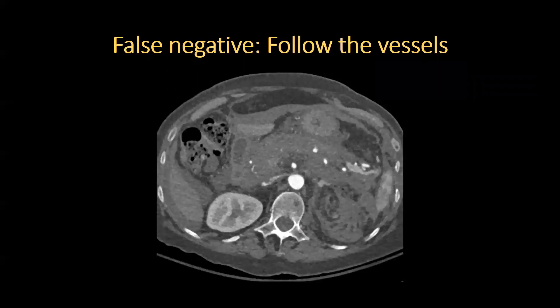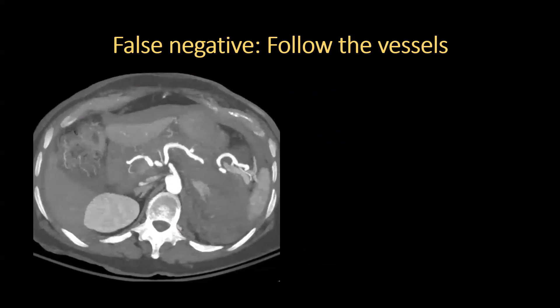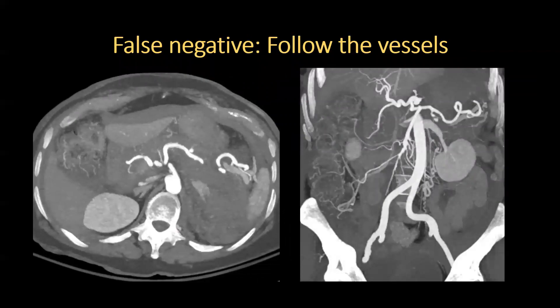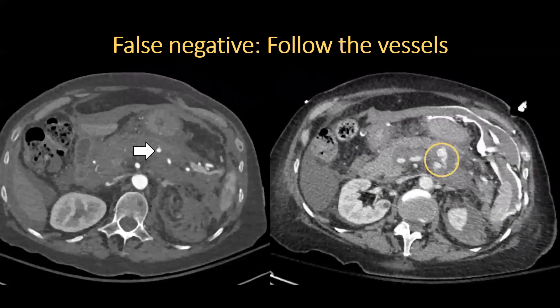This case highlights the importance of following the vessels, including the distal branches. A 67-year-old woman with rheumatoid arthritis presented with severe upper abdominal pain, shortness of breath, and hypotension. Hemoperitoneum is clear on the axial CTA image, but the vessel abnormality is hard to see. On maximum intensity projection, we see focal contrast outpouching along the splenic artery. The coronal MIP CTA image shows a lobulated, saccularly directed contrast outpouching from the splenic artery — a pseudoaneurysm. Two days later it ruptured with massive hemoperitoneum. It's important to follow all vessels, paying special attention to the pancreas where the hemorrhage is centered.